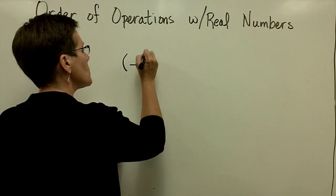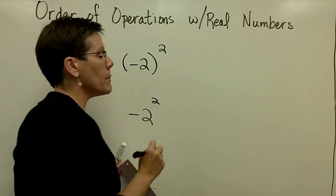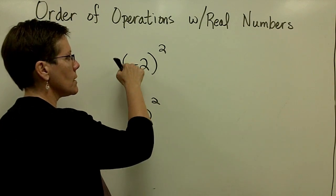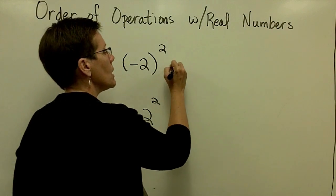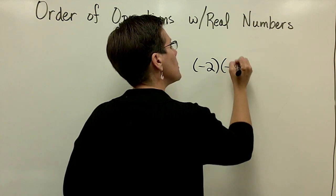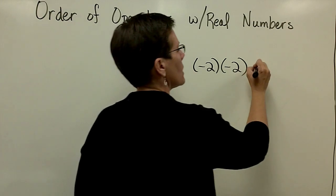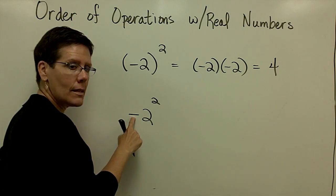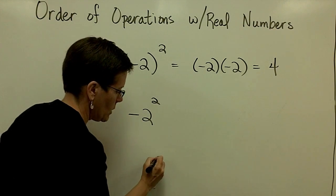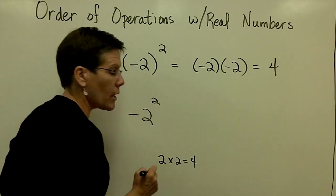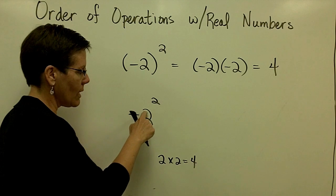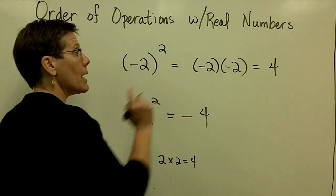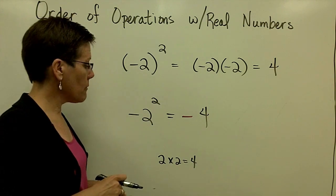Many people confuse this problem with this problem. And it's all about the parentheses. This problem right here says take what's in the parentheses, which is a negative 2, and square it. In other words, multiply it times itself two times. And a negative times a negative is a positive. This problem says to give me the opposite of 2 squared. 2 squared is 2 times 2, which is 4. I want the opposite of that 4. So I want a negative 4 for that problem, not a positive 4. All the difference in the world when you have parentheses versus not.